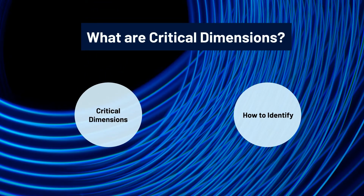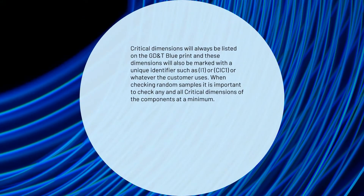But how do I identify them? Critical dimensions will always be listed on the GD&T blueprint, and these dimensions will also be marked with a unique identifier, such as an I or CIC, or whatever the customer uses when checking random samples. It is important to check any and all critical dimensions of the components at a minimum.